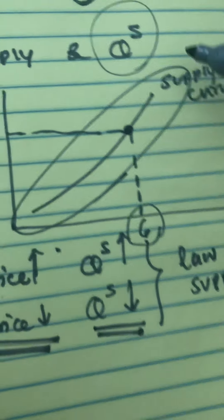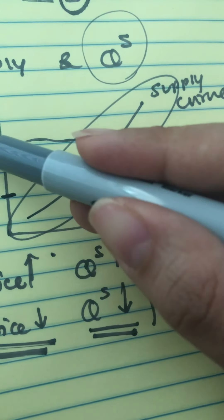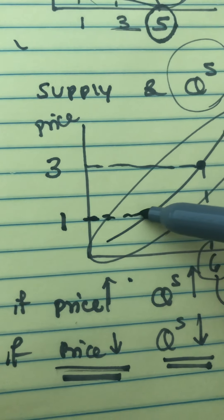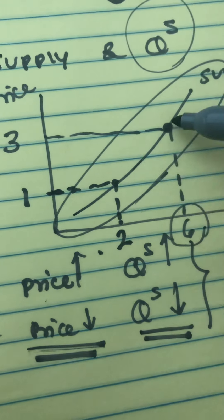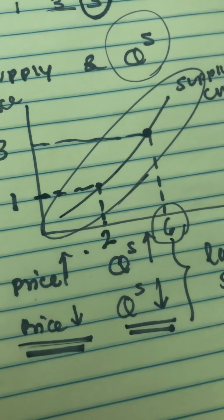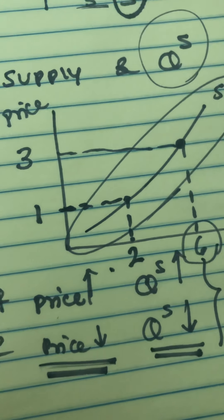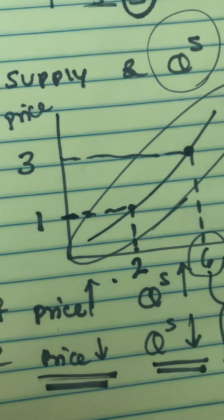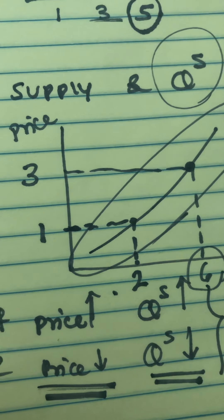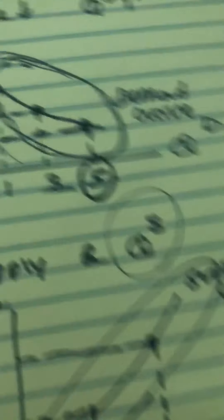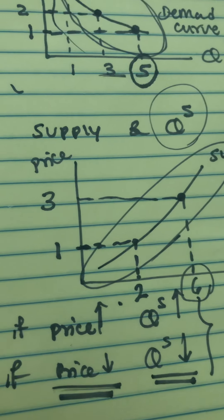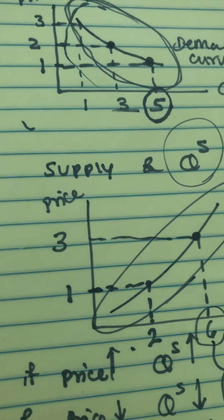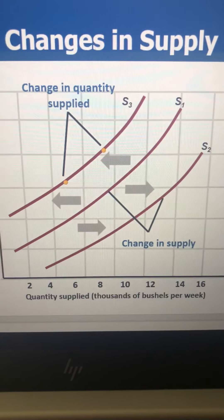So if price changes — say it drops from $3 to $1 — your quantity supplied changes from six to two. You are moving along the supply curve. But if anything other than price changes, such as taxes and subsidies, the price of resources or raw materials, changes in productivity, or the number of sellers in the market, then the whole supply curve will shift. Just like demand, make sure you know the difference between a change in supply versus a change in quantity supplied.